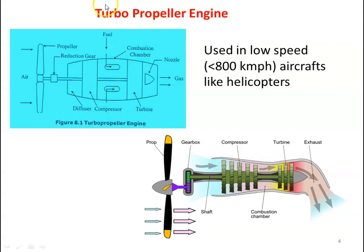The high pressure air then enters the combustion chamber where fuel is injected. Burning of the fuel takes place in the presence of air, and hot gases at around 1500 Kelvin are produced. The hot gases expand in the turbine, producing work that is completely used for driving the compressor and other accessories. The hot gases leaving the turbine then expand in the nozzle. The propeller circulates air and provides lift for the vehicle.